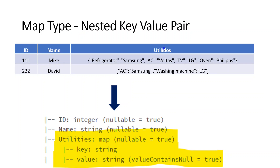Let's say we have a data frame for employees. For one employee, Mike, we are tracking different utilities he owns — refrigerator with brand Samsung, television with brand LG, and oven with brand Philips. One particular employee has different utilities. Coming to another employee, he might own different utilities — no need to keep the same utilities as other employees. For the next employee, David, we have only two key-value pairs: AC with Samsung, and washing machine with LG. So the number of key-value pairs are different.